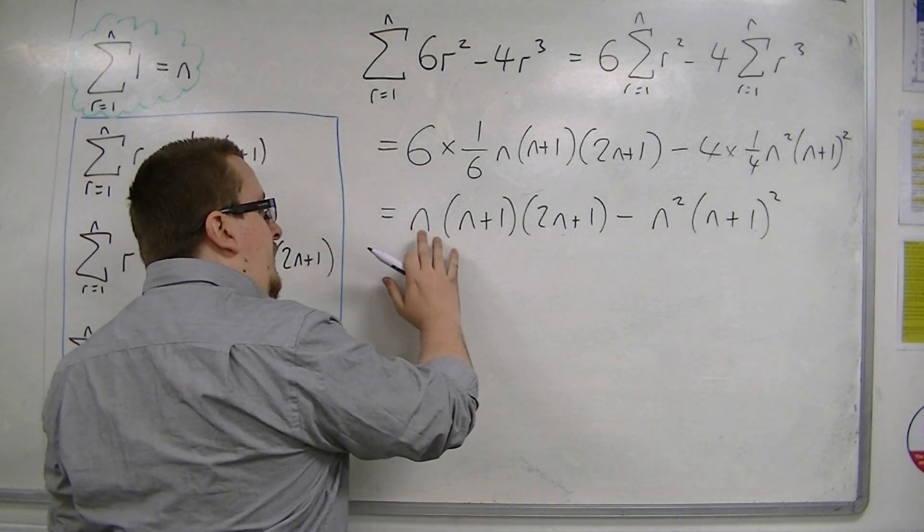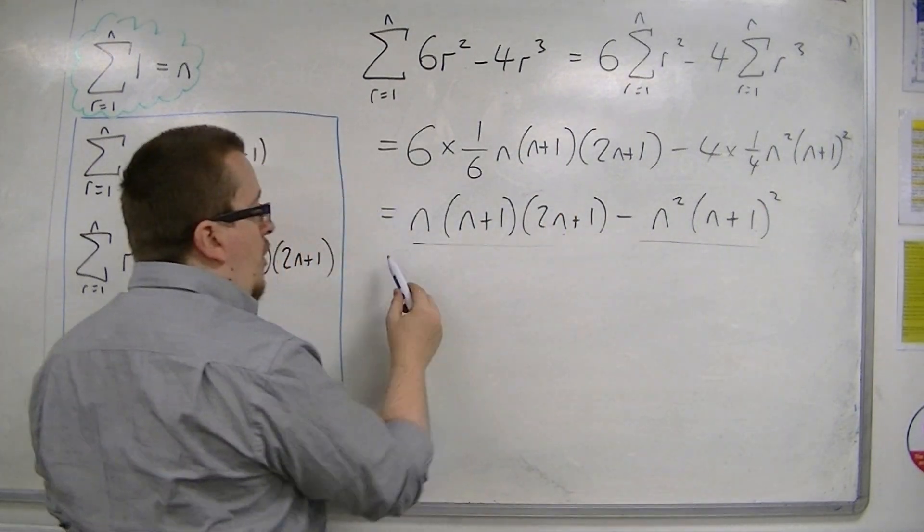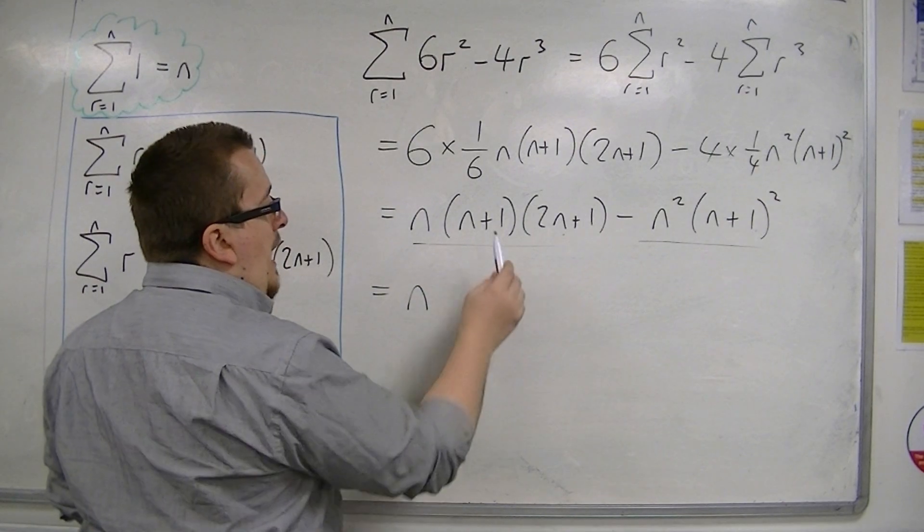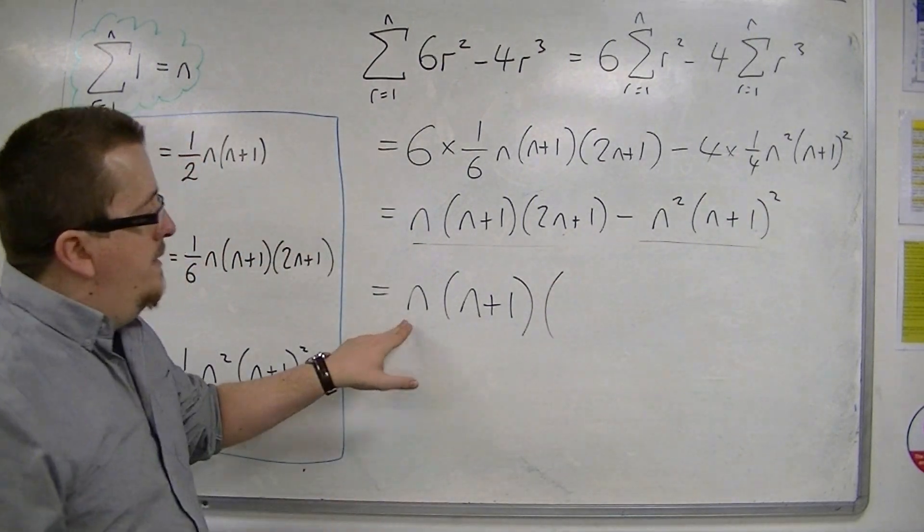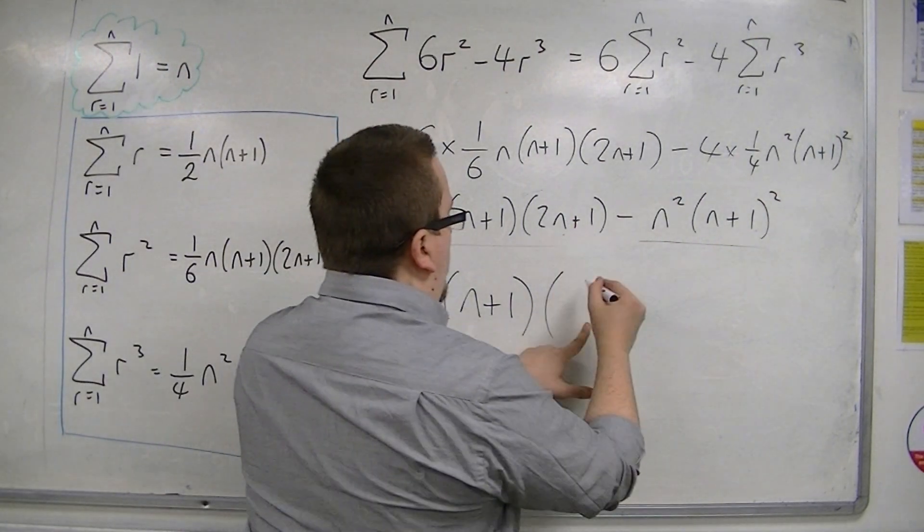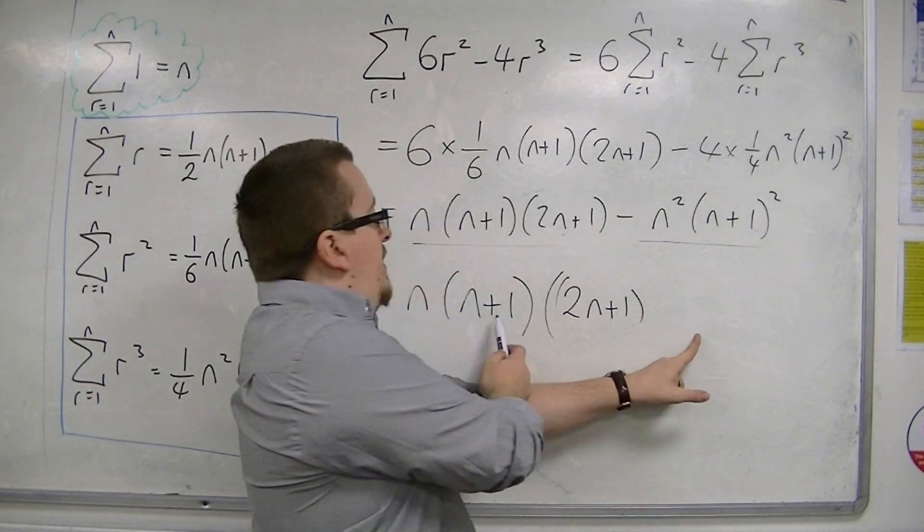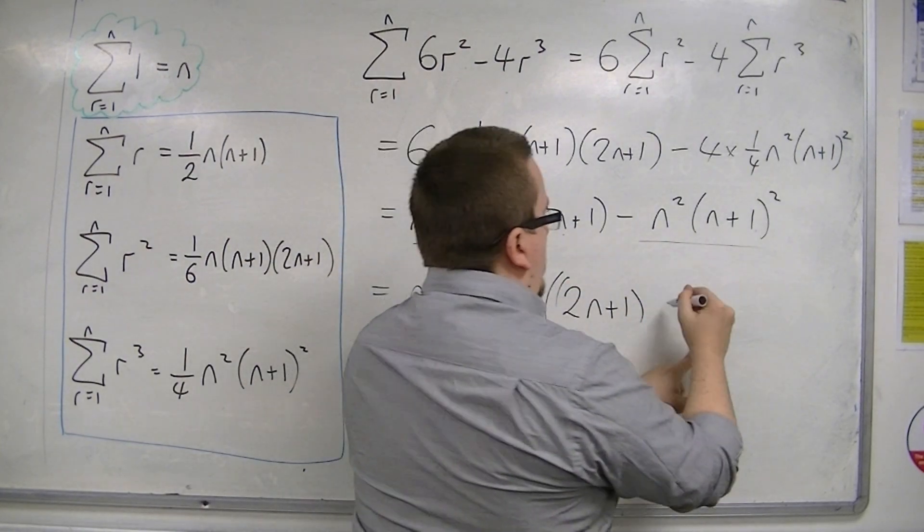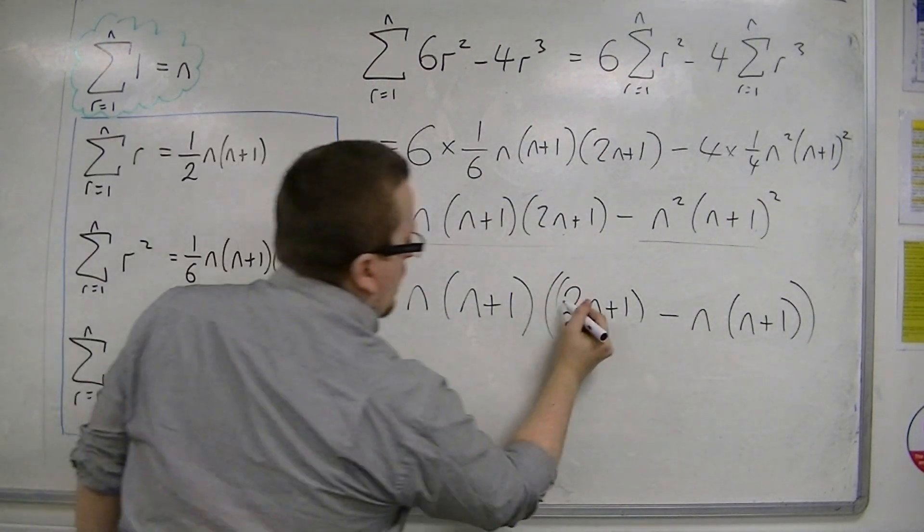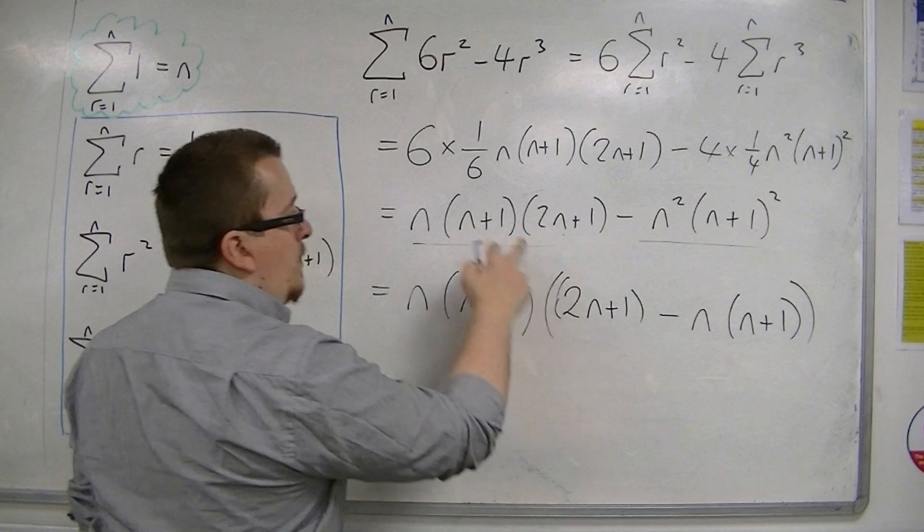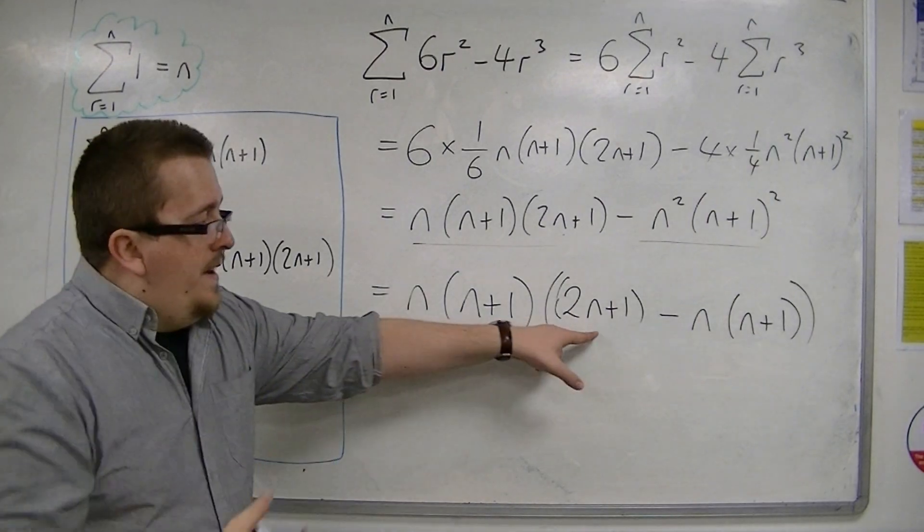So, I can see that both of these terms, so this term and this term, they both have an n in common. So, I can factor that out, and they both have an n plus 1, so I can factor that out. So, n times n plus 1 times 2n plus 1 will make this first term. And n times n plus 1 times n times n plus 1 will make the second term. So, multiplying that by that will get you there. That by that, times that will get you there.